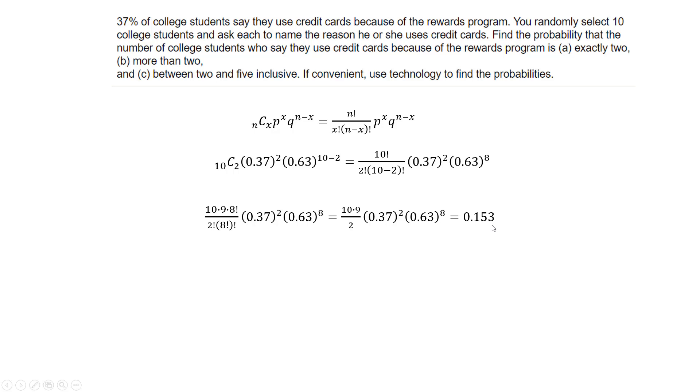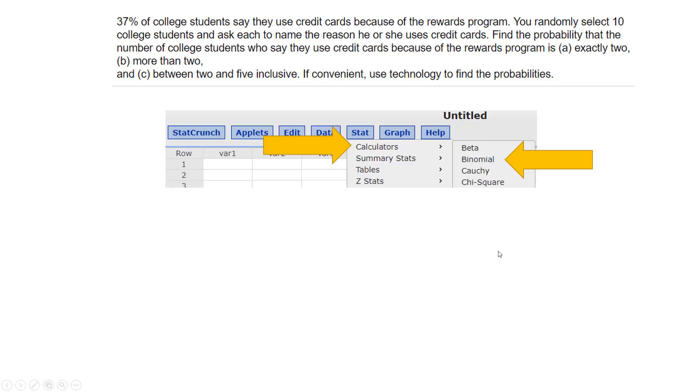I think StatCrunch or your calculator will be easier. If you use StatCrunch and go to the calculators binomial, it's kind of cool because they even graph it. But you just have to be careful down here that you pick equal.